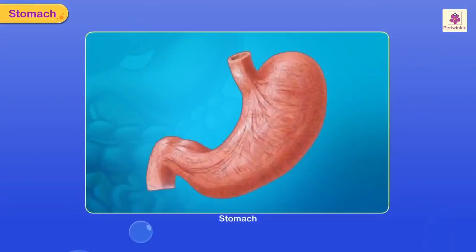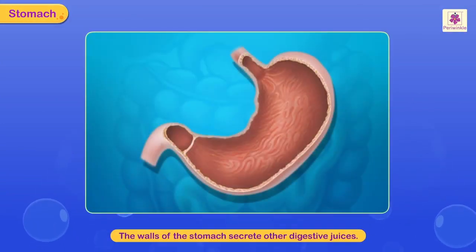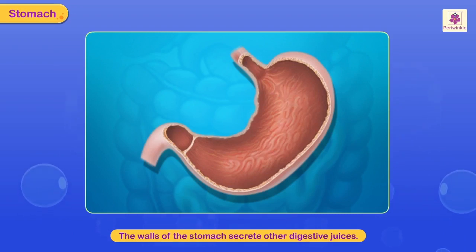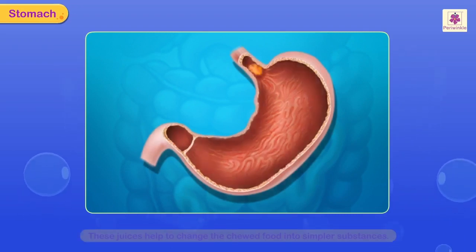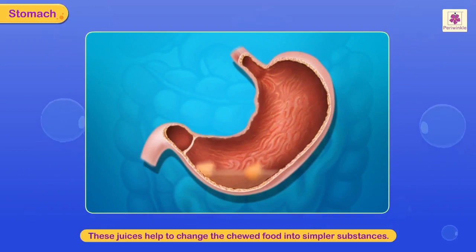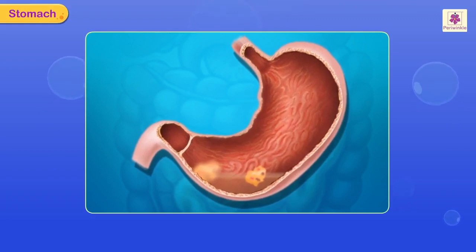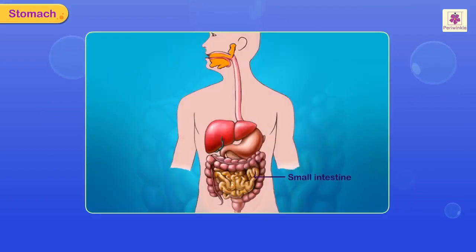The stomach is like a muscular bag. The walls of the stomach secrete digestive juices which help to break the chewed food into simpler substances. From the stomach, the food goes into the small intestine.